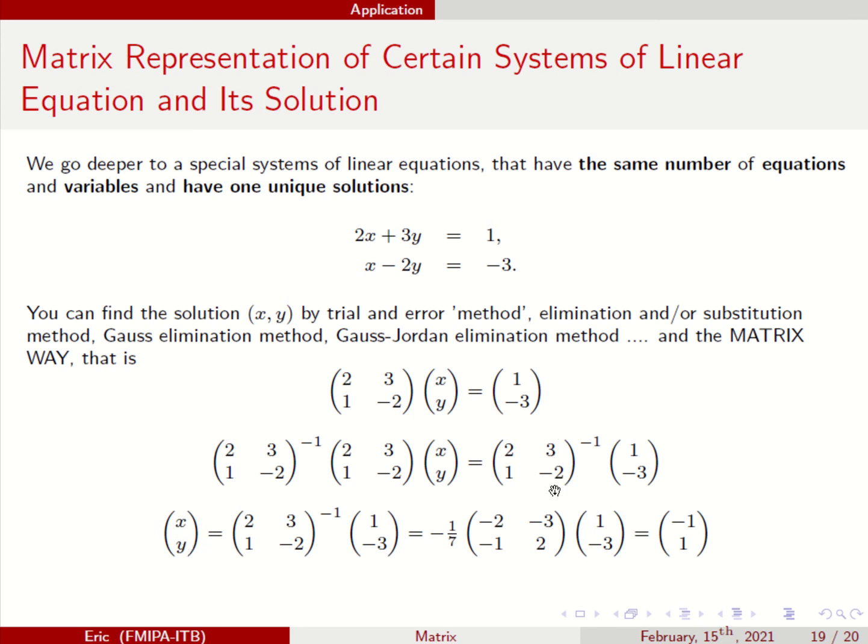And what's the inverse of this? You can use a cofactor or something else, or Gauss-Jordan elimination method. You end up with this, the inverse times this. So you know x should be minus 1 and y should be 1.